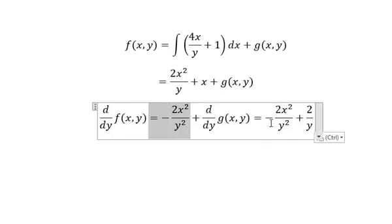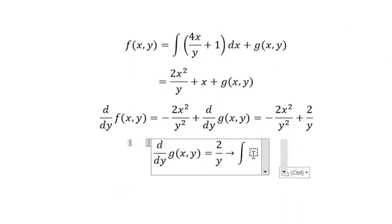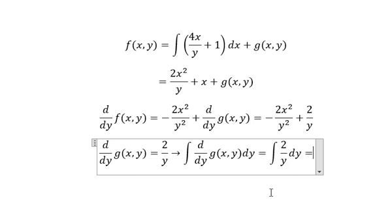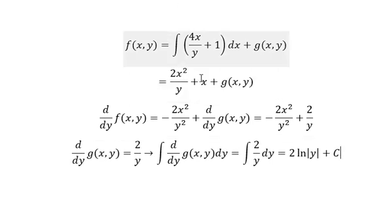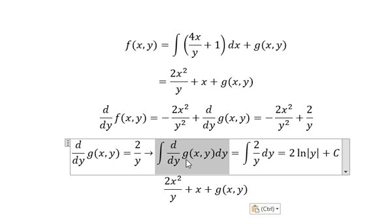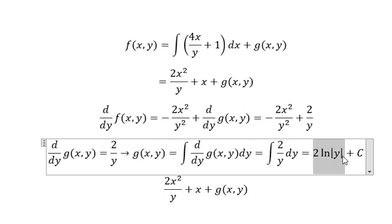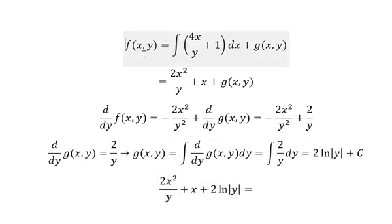So we simplify this one and this one for both sides. Then we put the integration for both sides: the integration of the absolute value of Y. And I will put about C. Now we go back in here. The integration of this one, that is about g(y). And this one equals to this one, so I will put this one in here. And we have this one equals to this one.